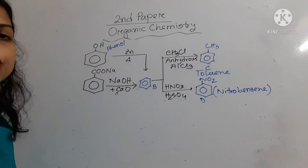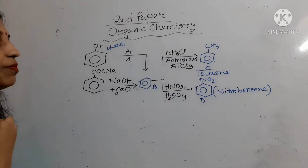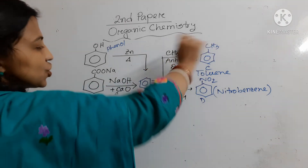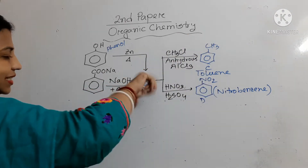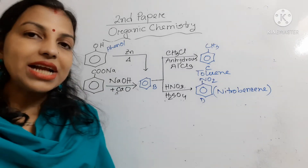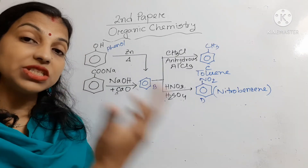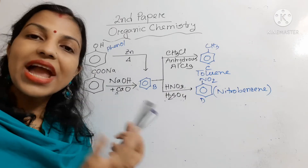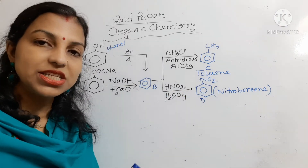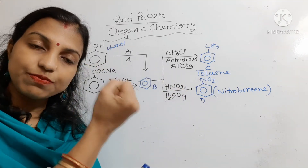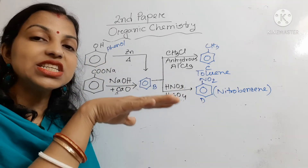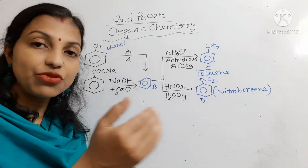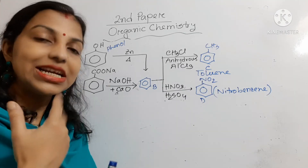The next question asks about the order of reactivity in electrophilic substitution reaction between B, C, and D — that is benzene, toluene, and nitrobenzene. In toluene, a CH3 group is present, which is an activating group — it donates electrons to the benzene ring, increasing its reactivity. But the nitro group is a deactivating group — it accepts electrons from the benzene ring, decreasing electron density and making it harder for electrophiles to attack. So the reactivity of nitrobenzene is decreased.